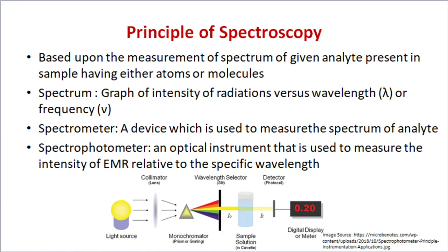Moving to the principle of spectroscopy: it is based on the measurement of the spectrum of a given analyte present in the sample. The spectrum consists of a graph of intensity of radiation — through absorption or emission by the sample — versus wavelength or frequency. A spectrometer is a device used to measure the spectrum of the analyte.